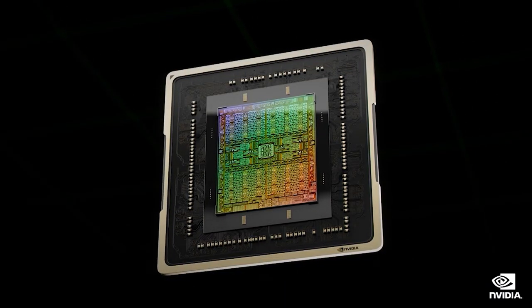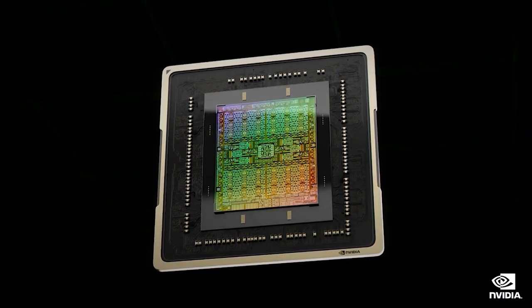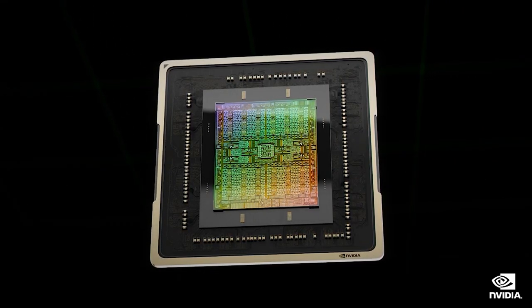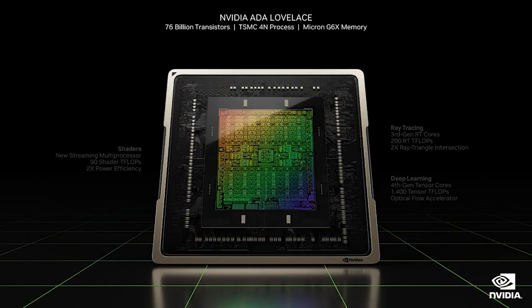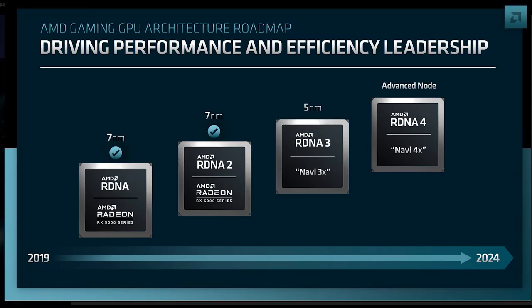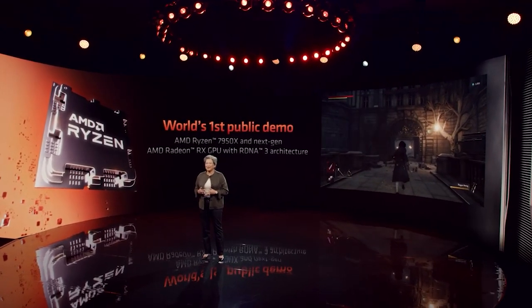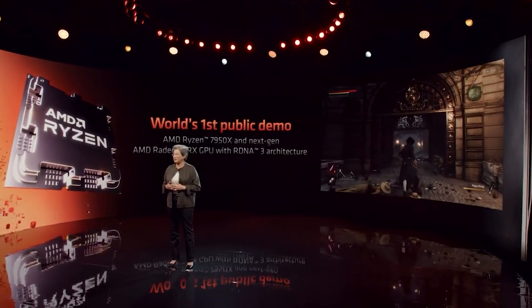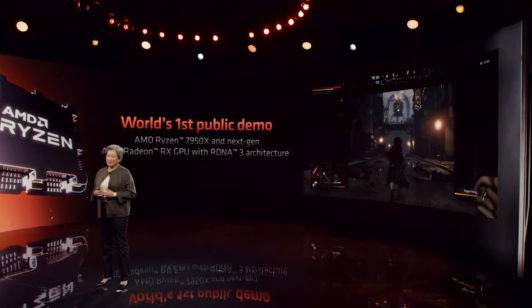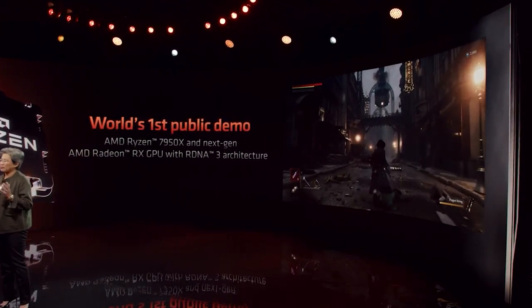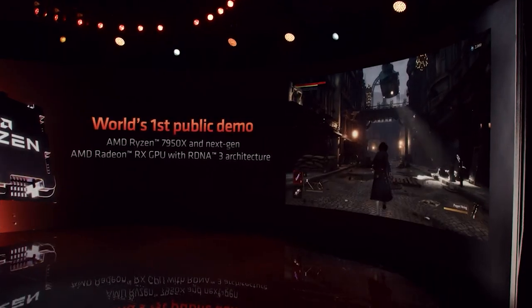Larger monolithic dies are much more costly to produce, particularly due to TSMC and other fabs charging more for denser nodes. They have a greater chance of defects, generate more heat, and require more power. And of course there's also flexibility. You can't just keep scaling chips to bigger and bigger sizes — even ignoring manufacturing costs, reticle limits mean there's a physical limit to how large you can design a chip.